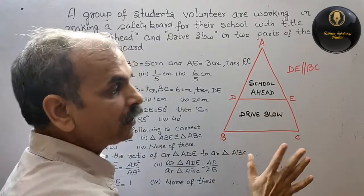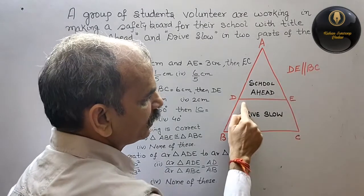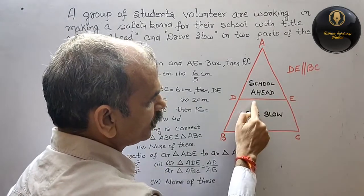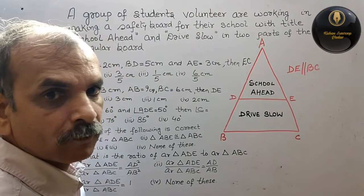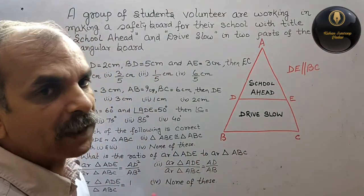This is your triangular board. Here it is written School Ahead and second part they have written Drive Slow. Criteria is one that DE is parallel to BC. That means these two lines are parallel. Now, questions.